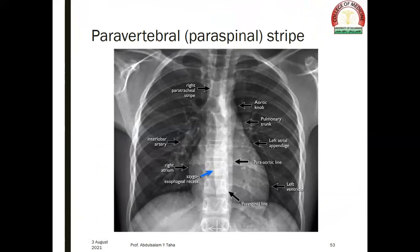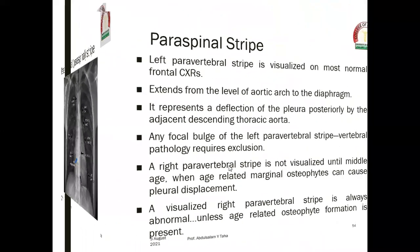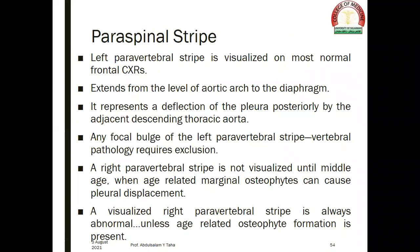The paravertebral or paraspinal strip may also be visible on x-ray. The left paravertebral strip is visualized on most normal frontal chest x-rays, extending from the level of the aortic arch to the diaphragm. It represents a deflection of the pleura posteriorly by the adjacent descending thoracic aorta. Any focal bulge of the left paravertebral strip indicates vertebral pathology. The right paravertebral strip is not visualized until middle age, when age-related marginal osteophytes can cause pleural displacement. Therefore, a visualized right paravertebral strip is always abnormal unless age-related osteophyte formation is present.